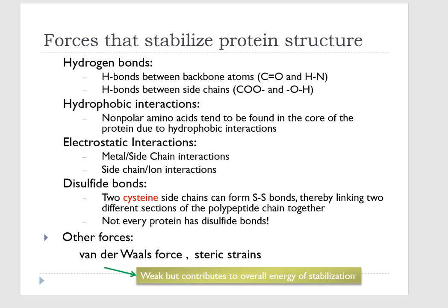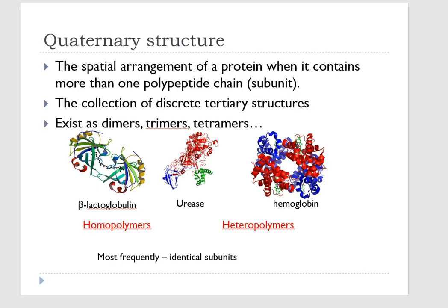The last protein structure is the quaternary structure. Some proteins contain multiple polypeptide chains, resulting in a quaternary structure. Quaternary structures are held together by the same types of chemical bonds found in tertiary structures, including weak bonds and disulfide bridges. They can be made up of protein subunits that are the same, like homopolymers, or different, like heteropolymers.